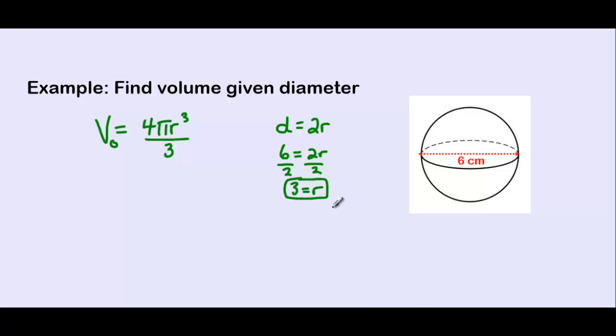So now we can plug our radius of 3 into our formula for the volume of a sphere. So here we have 4 times π times 3³, all divided by 3.